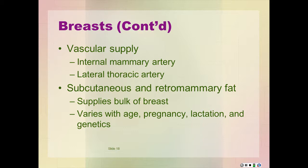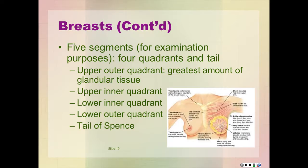The vascular supply to the breast is primarily through branches of the internal mammary artery and the lateral thoracic artery. This network provides most of the blood supply to the deeper tissues of the breast and to the nipple. For the purposes of examination, the breast is divided into five segments: four quadrants and a tail. See page 457, figure 16.2. The greatest amount of glandular tissue lies in the upper outer quadrant. The breast tissue extends from this quadrant into the axilla, forming the tail of Spence.